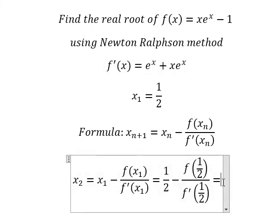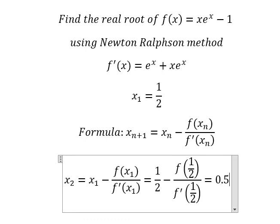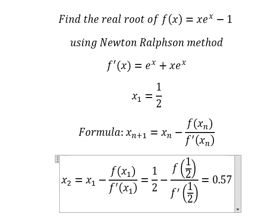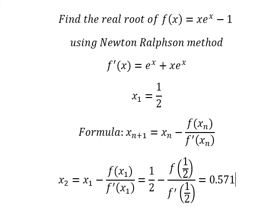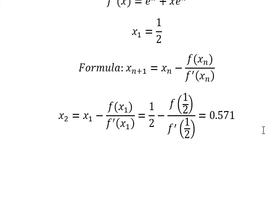We use the calculator and we have zero point five seven one. Now we keep repeating the process and now we find x of number three.